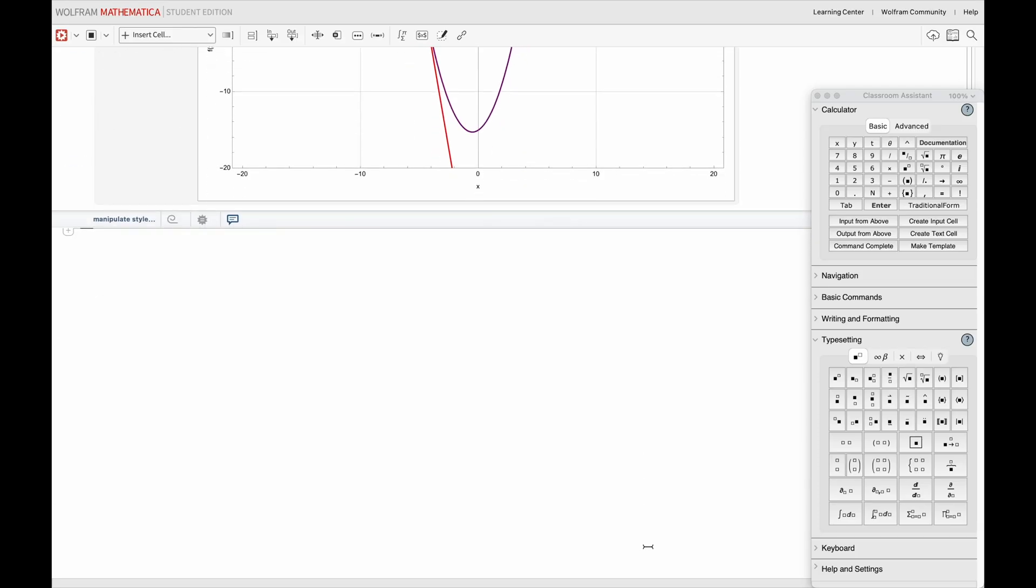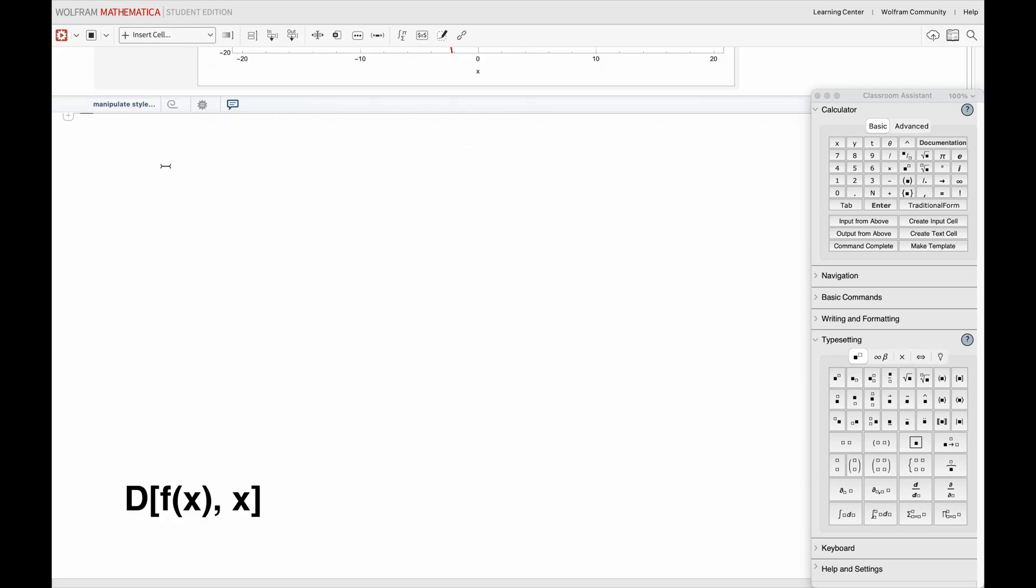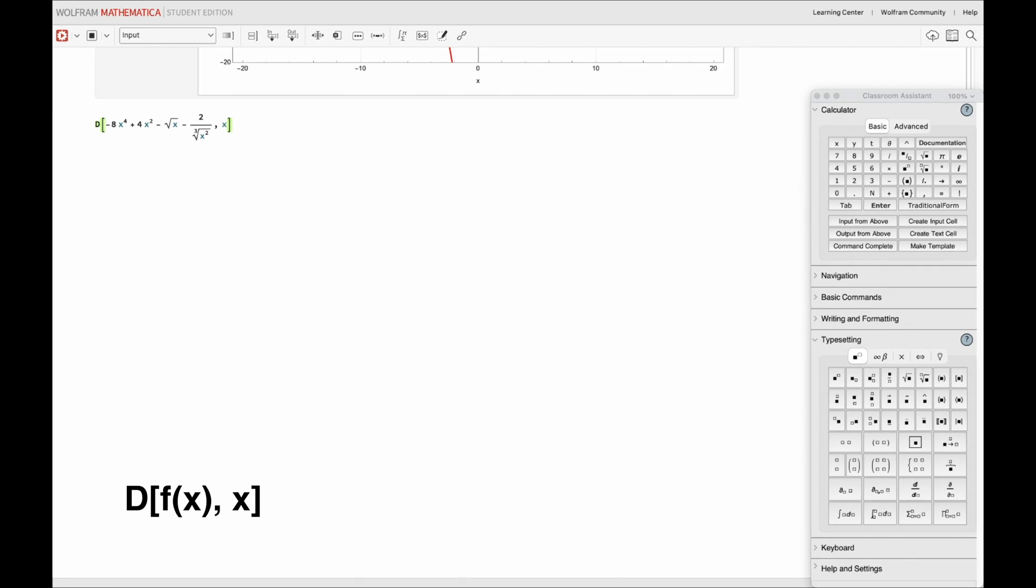But we can also naturally code this differentiation in Mathematica. It's just as simple as typing D, open a square bracket, and we hereby type the function in this way, then comma, space, and the variable against which we are differentiating, usually x, and close the square bracket.